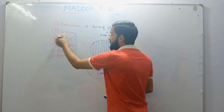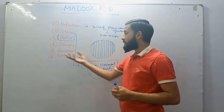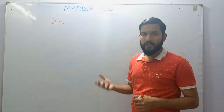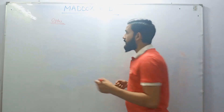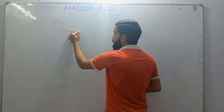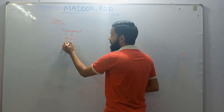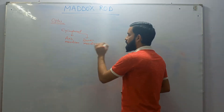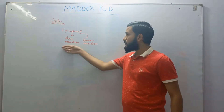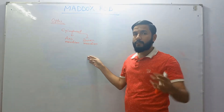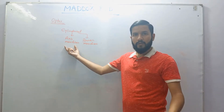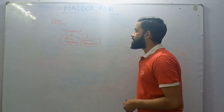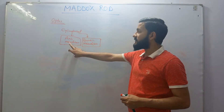Next is optics. Understanding optics is very important to be able to understand the procedure and results of the Maddox rod. As mentioned in the definition, it consists of plano-cylindrical lenses. In a cylindrical lens, we have an axis meridian and a power meridian. We will focus on both these meridians — what happens when light rays pass through the axis meridian and what happens when light rays pass through the power meridian of the Maddox rod.